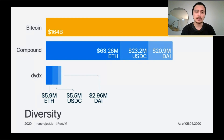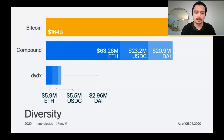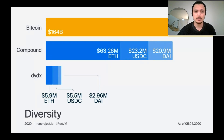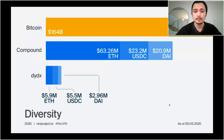The other thing we get with diversity is risk diversification. If a single asset class crashes, we may see that our other assets remain stable or don't crash nearly as hard. This can help keep our systems less likely to liquidate and more stable in times of volatility.